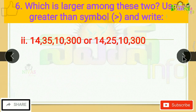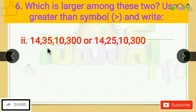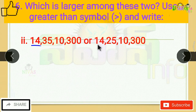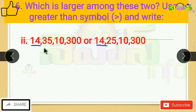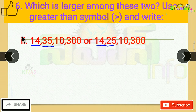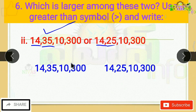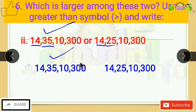The next problem: compare two numbers by counting digits, then comparing place values. The lakhs digit here is 35 lakhs versus 25 lakhs. Since 35 is greater than 25, the first number is bigger, so we use the greater than symbol.